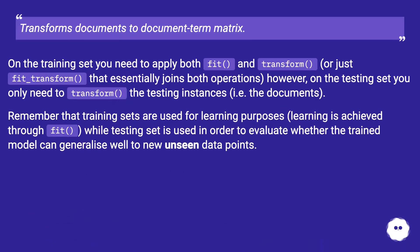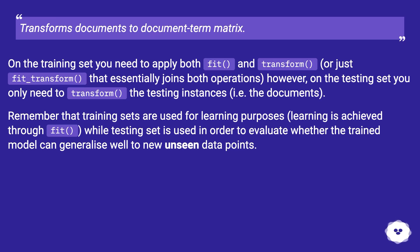On the training set, you need to apply both fit and transform — or simply fit_transform, which joins both operations. However, on the testing set, you only need to transform the documents. Remember that training sets are used for learning purposes, achieved through fit, while the testing set evaluates whether the trained model can generalize well to new, unseen data points.